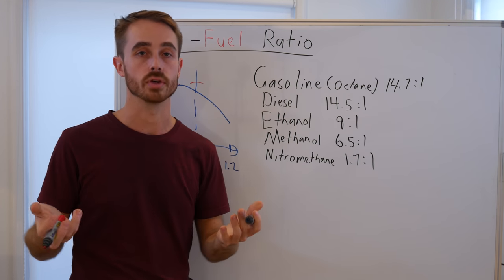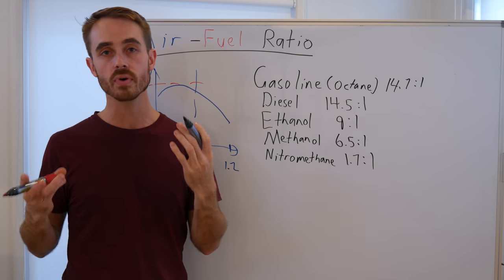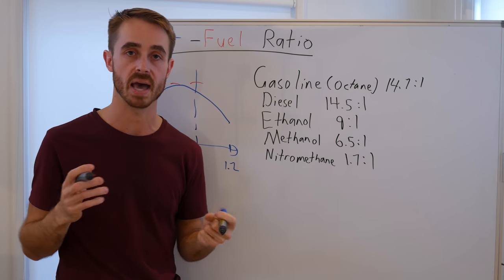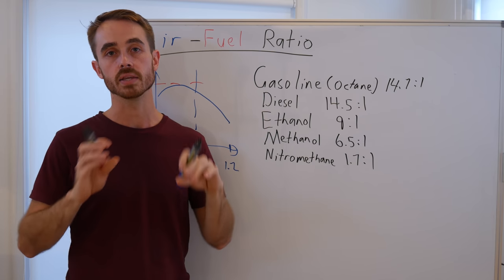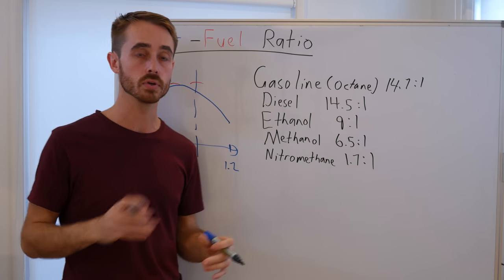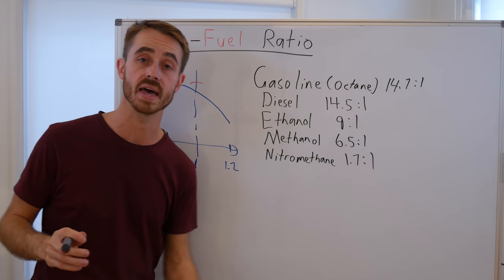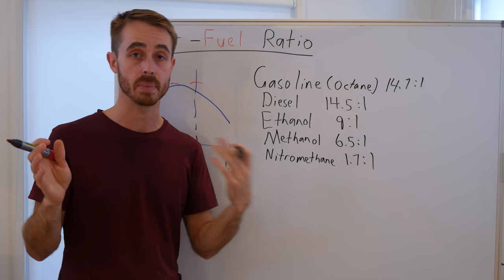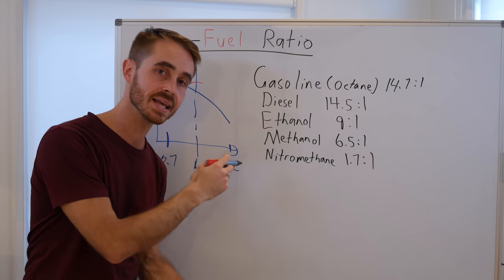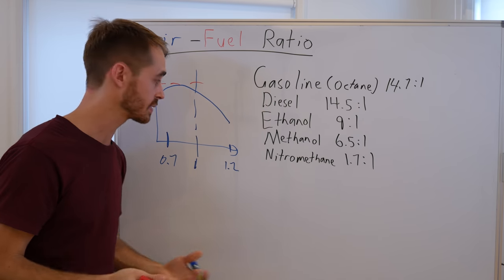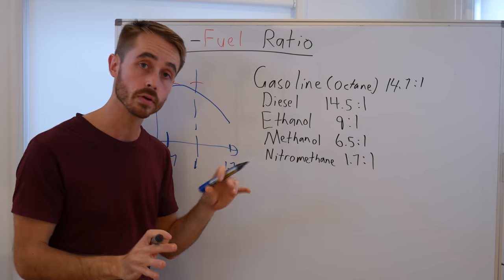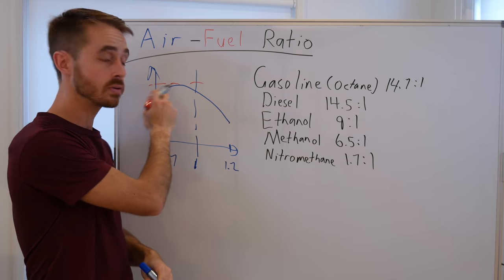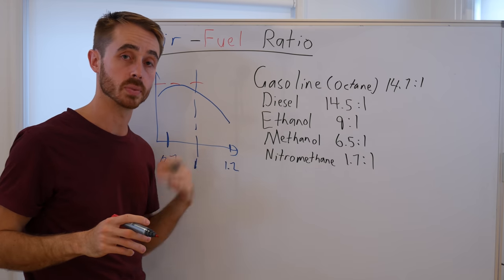We can see that peak torque is produced well below the stoichiometric ratio. This is primarily because while theoretically stoichiometric is best for peak burn efficiency, in reality you never get quite perfect mixing of the fuel. Adding a bit more fuel ensures you burn all of that air — you waste a tiny bit of fuel, but burning all that air ensures peak power and torque. If you run lean, you're burning all your fuel but there's less air overall, so you end up with less power.